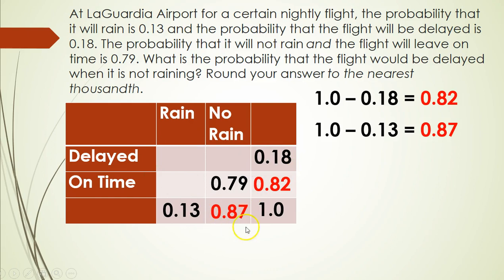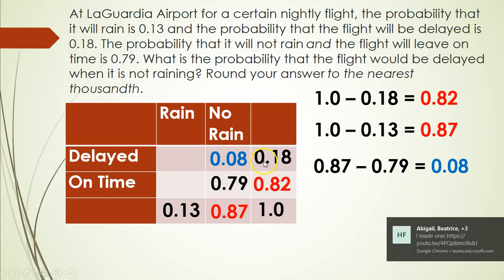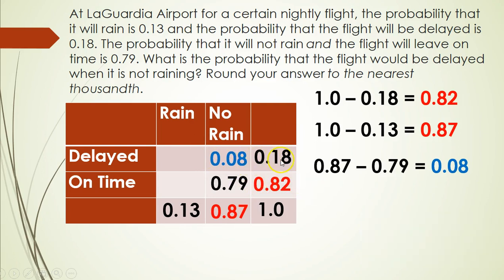Then I keep working backwards. The next cell I can find is the not-raining and on-time blank — the two cells in that column have to add up to 0.87, so I do 0.87 minus 0.79, which gives me 0.08. Then, since the two delayed cells have to add up to 0.18, I subtract 0.08 from 0.18 to get 0.10.